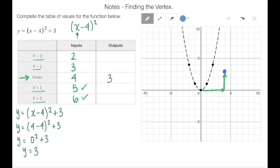So let's go ahead and start by substituting in 5. y equals 5 minus 4 squared plus 3. 5 minus 4 is 1 squared plus 3. 1 squared is 1. 1 plus 3 is 4. So I now know that when I input 5 my output is going to be 4.